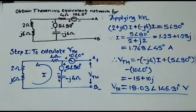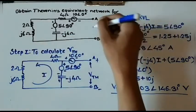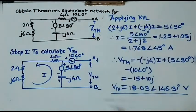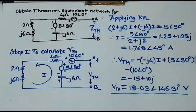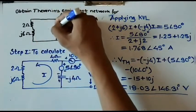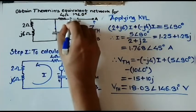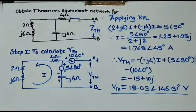Step two is to calculate ZTH, the Thevenin's equivalent impedance. To calculate ZTH, we remove the load resistance — no load resistance is given here. We also remove all voltage sources and current sources. Voltage sources are replaced by short circuits and current sources are replaced by open circuits. Here only voltage sources are given, so we replace them with short circuits. Our circuit is now modified for step two.